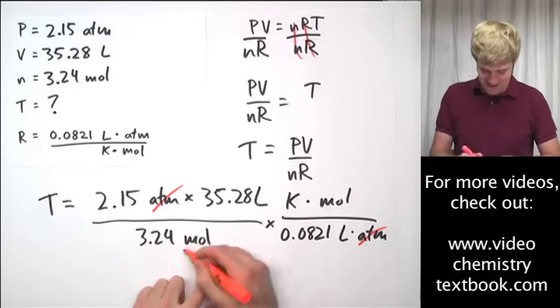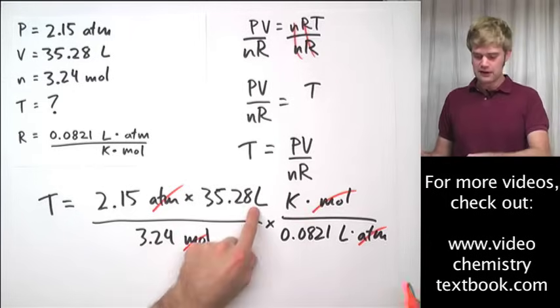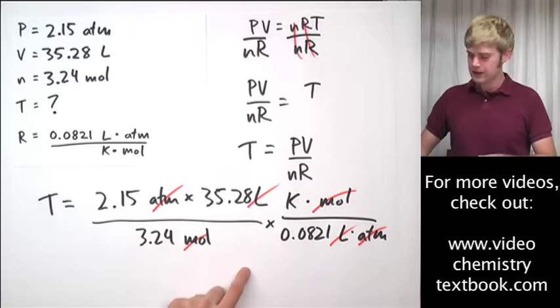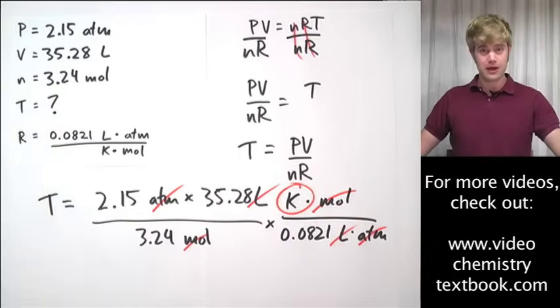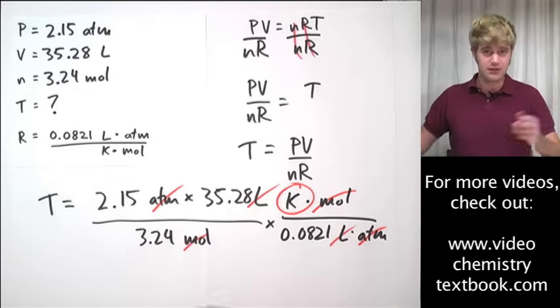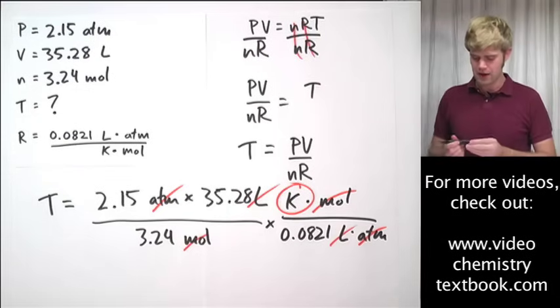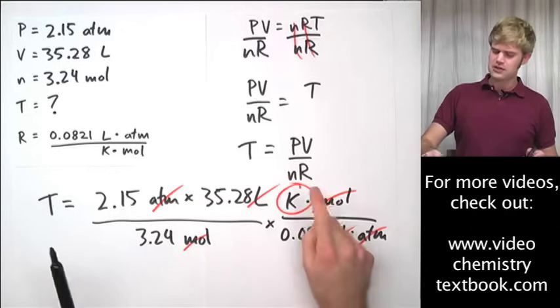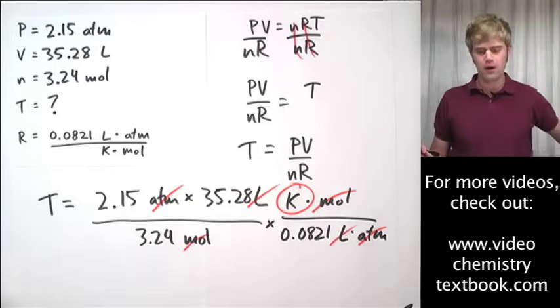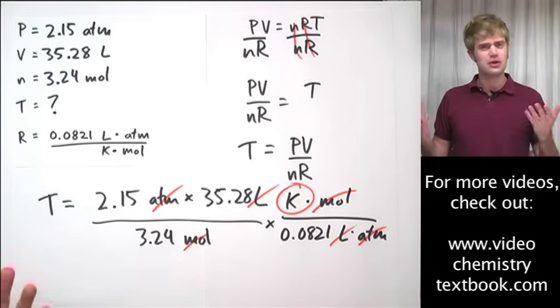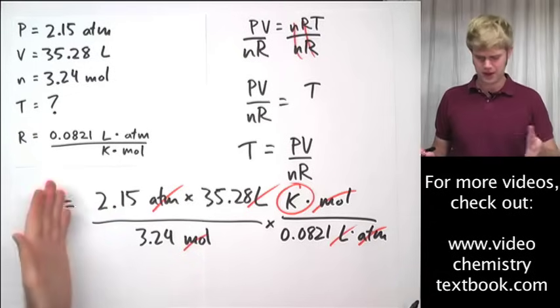Moles down here. Moles up here. Cancels out. Liters up here. Liters down there. I'm left with Kelvin, which makes sense because I'm solving for temperature. So, my final answer is obviously going to have the units of Kelvin. But canceling out all these other units and being left with just the units I'm looking for also lets me know that I went ahead and I set up the equation correctly.